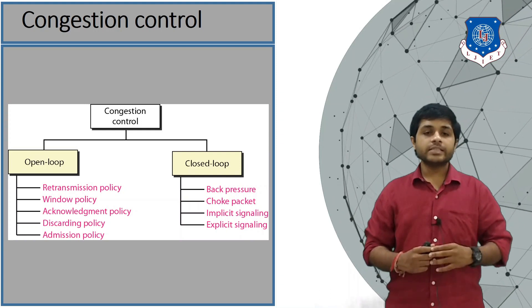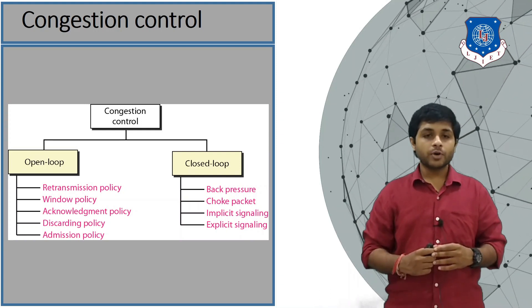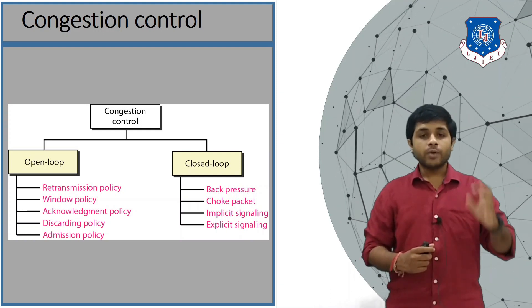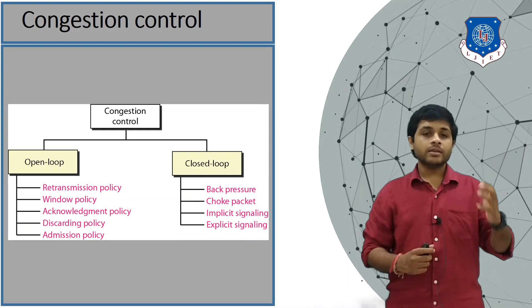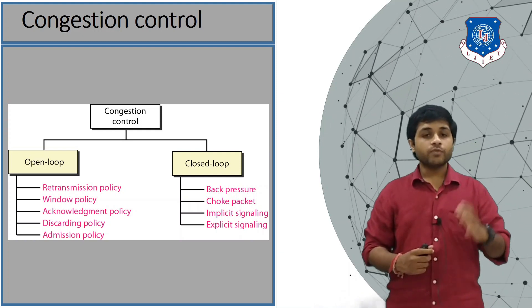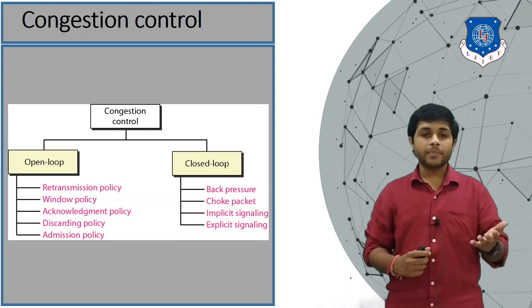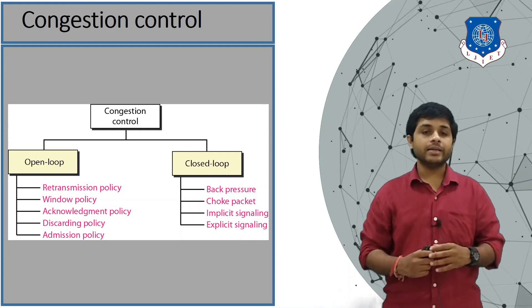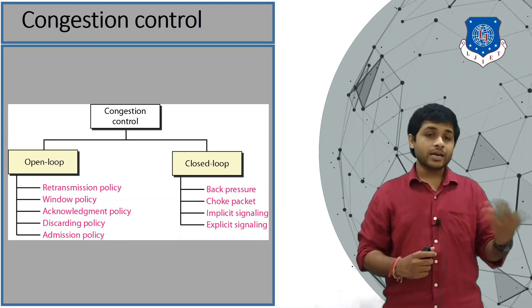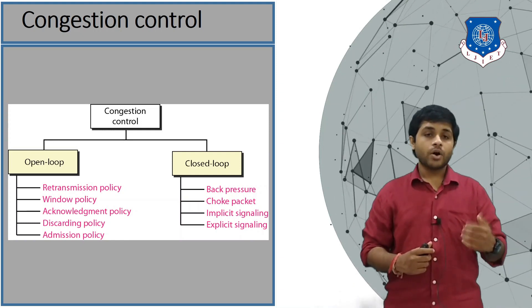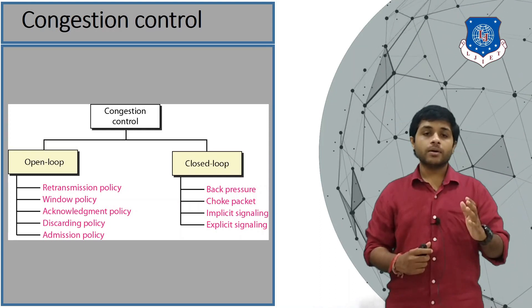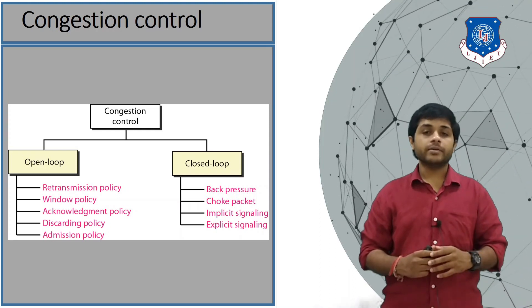The last type in open loop congestion is the admission policy. The admission policy tells that the router can analyze packets that are having higher priority and can discard or delay some packets according to their priority.